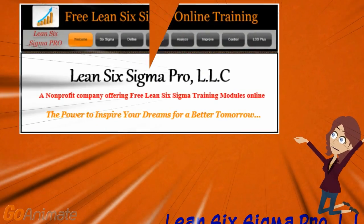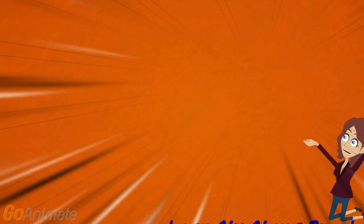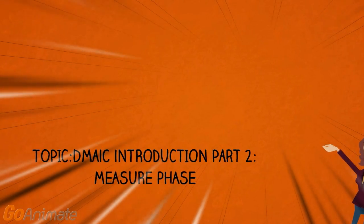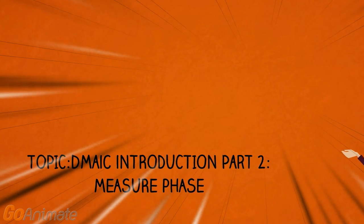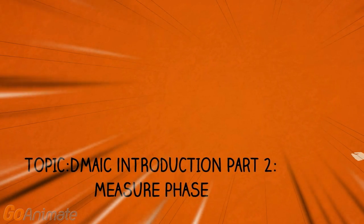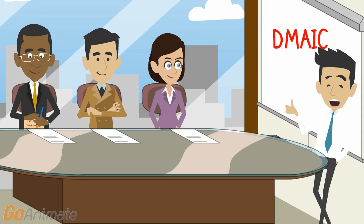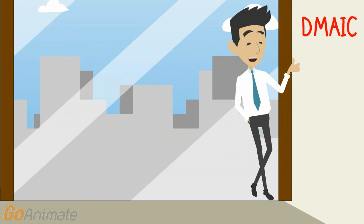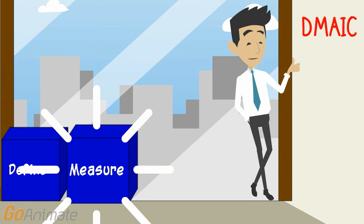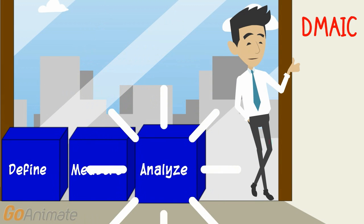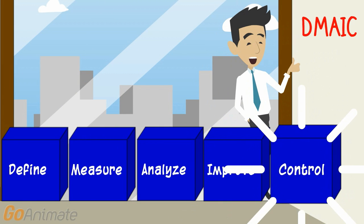Welcome to Lean Six Sigma Pro's free module on the Introduction to DMAIC Process Part 2. In this module we will review the measure phase of the DMAIC process. Hello, ladies and gentlemen. Today we are going to talk about a 5-step improvement process known as DMAIC, which stands for Define, Measure, Analyze, Improve, and Control.